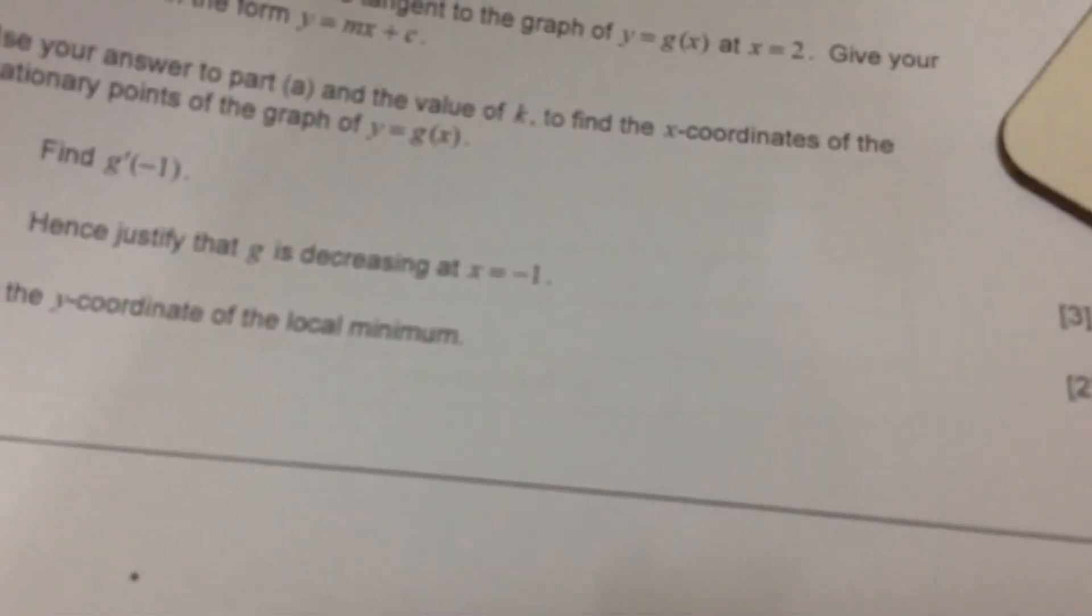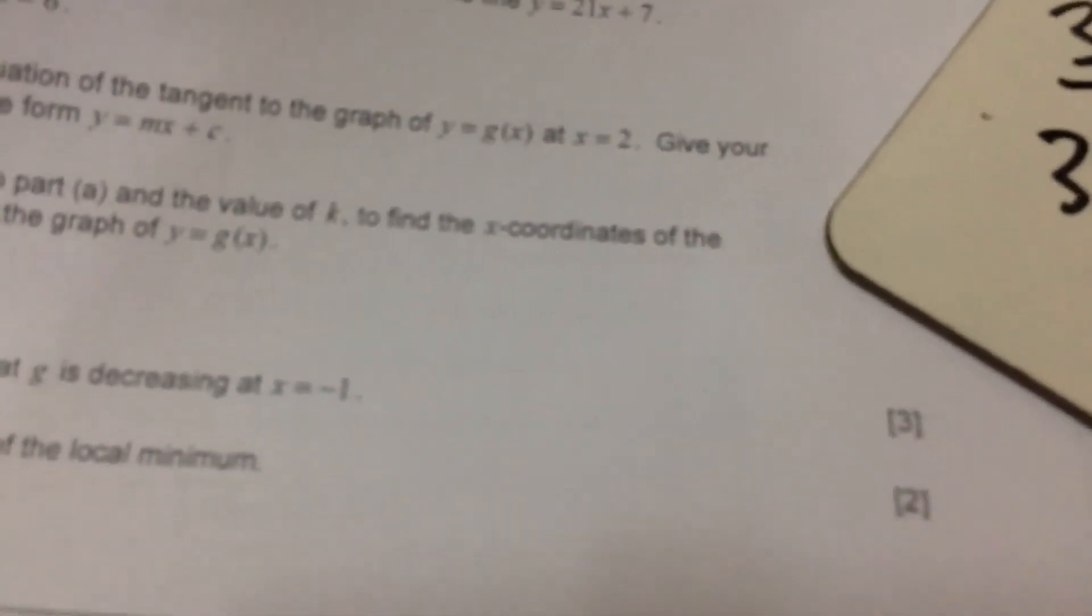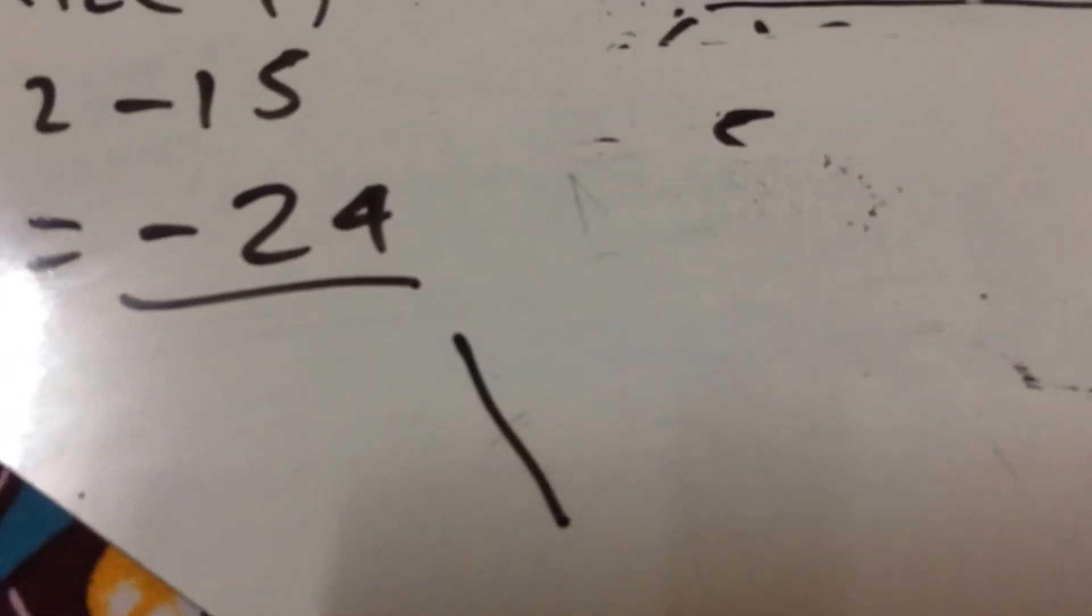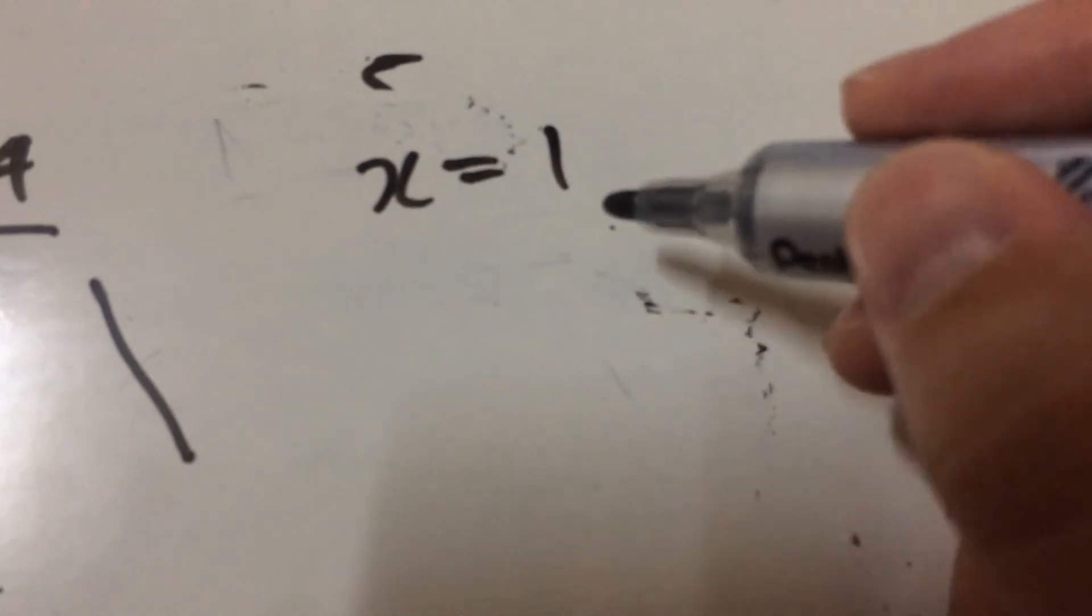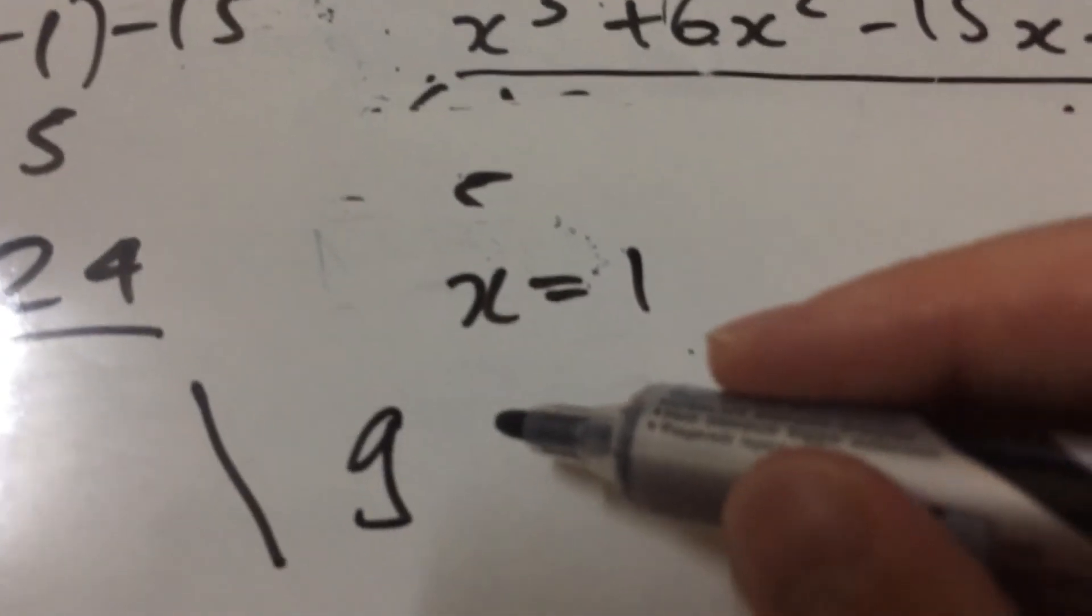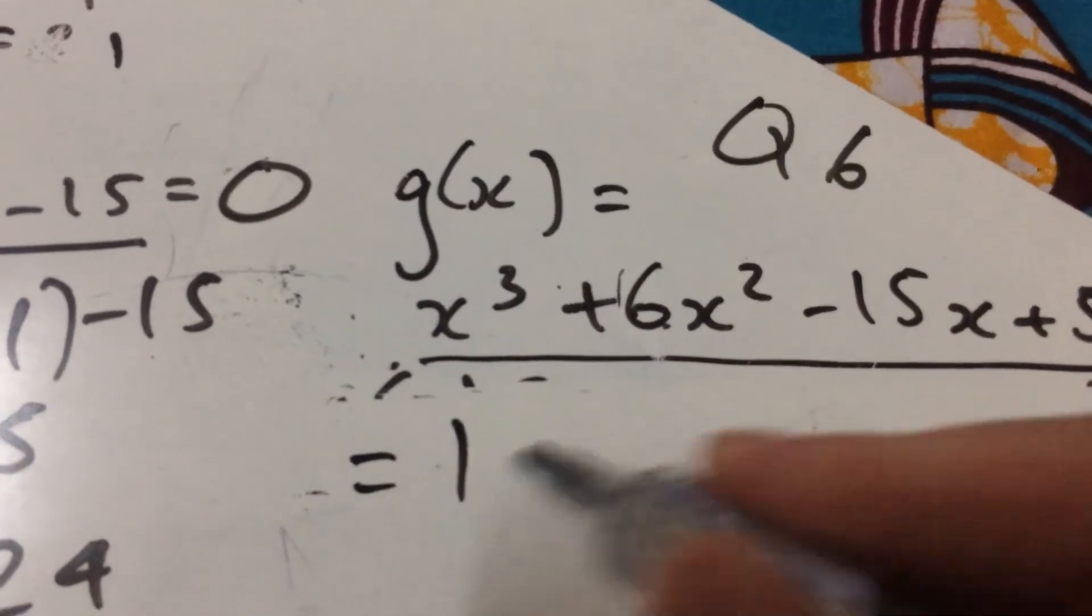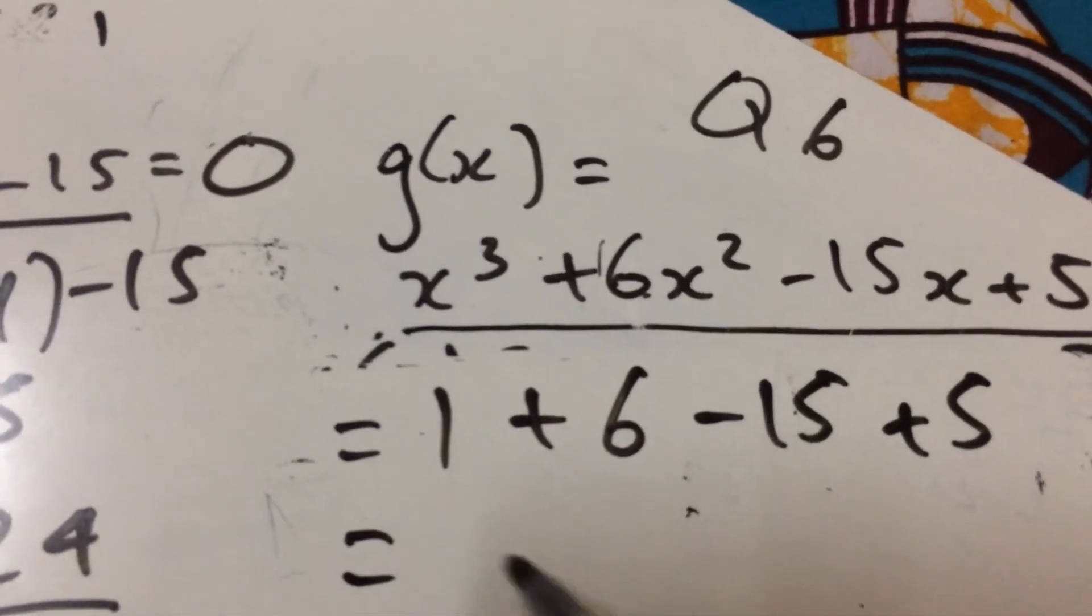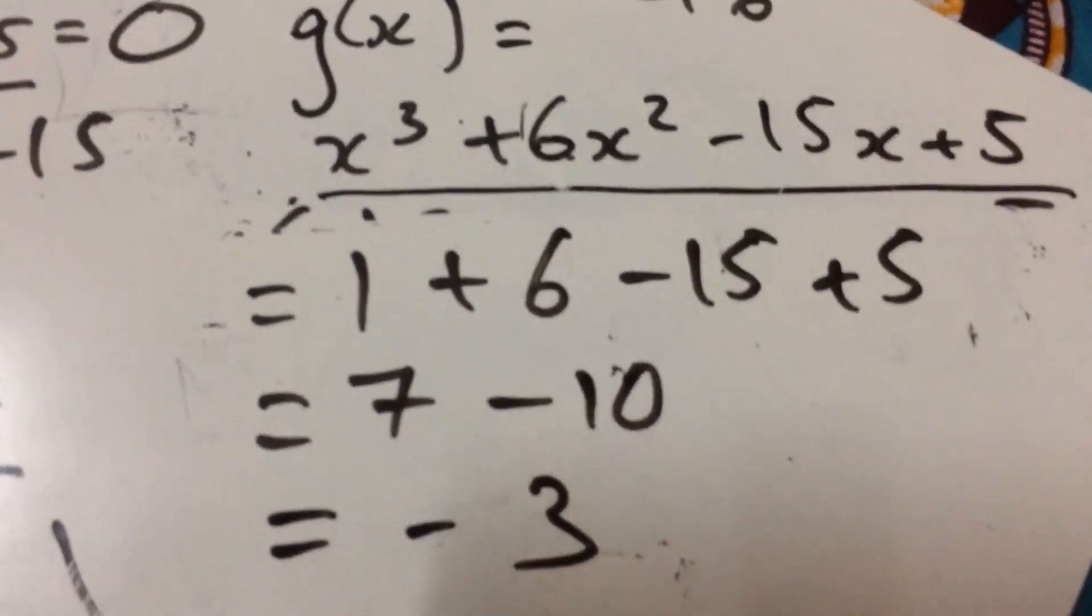And, the last point says, for one mark, find the y-coordinate of the local minimum. So, for that local minimum, we're going to go back to the stationary points. And, remember, when we worked them out, one of them was 1 and one was -5. So, we're going to find that when x = 1, we're going to plug that into the original function, because we're at the y-coordinate now. So, we're going to go back to that original function that we had there. So, that's 1 + 6 - 15 + 5. So, that's going to be 7 - 10. We should end up with -3. There we go.